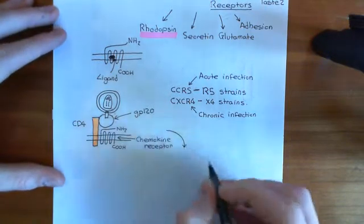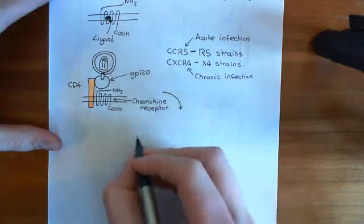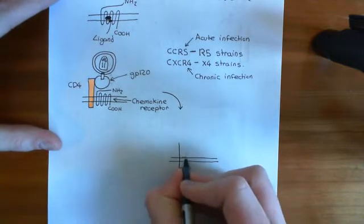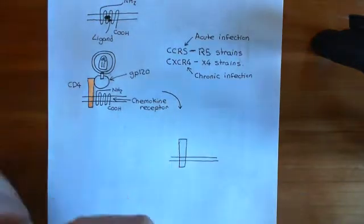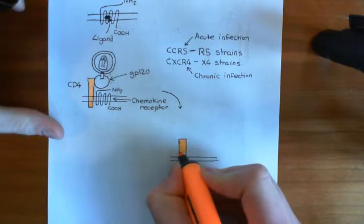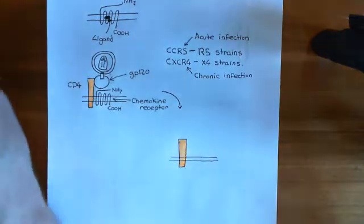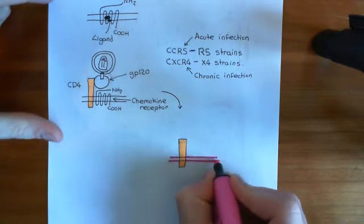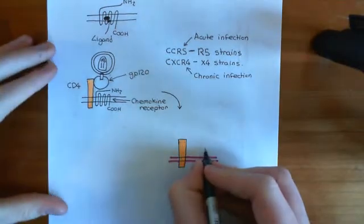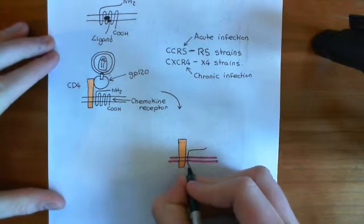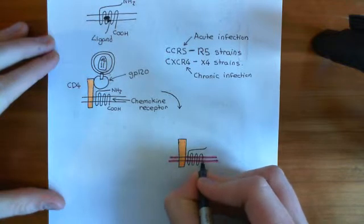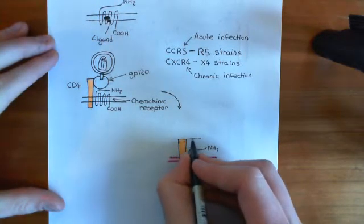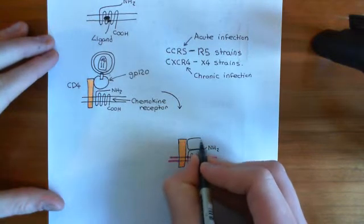Let me show this happening. We have the lipid bilayer of the cell containing CD4 — coloured in orange — and the chemokine receptor with its seven membrane-spanning alpha helices, its amino terminus, and its carboxy terminus. GP120 is now bound to both CD4 and the chemokine receptor. GP41 will have changed its position relative to GP120 and will now be situated nearby.